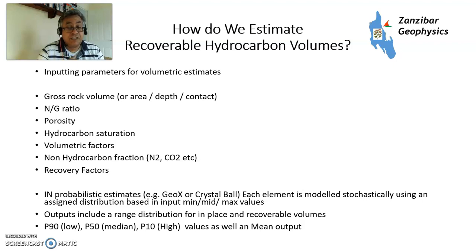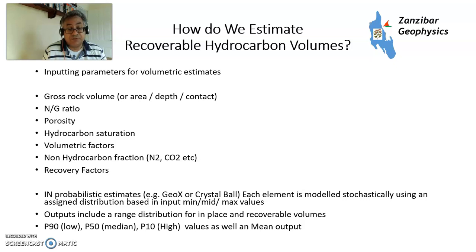In probabilistic estimates, for example in software GeoX (now part of Schlumberger) or Crystal Ball, each element is modeled stochastically — you model them by probability distribution and you have an output range for both in-place and recoverable volumes. Generally that's expressed as P90, which is low; P50, which is median; P10, which is high; and the mean output. Note that some people in America tend to refer to P90 as high and P10 as low, so please clarify which convention you're using.